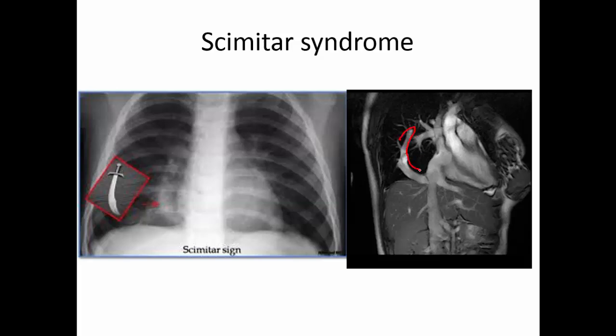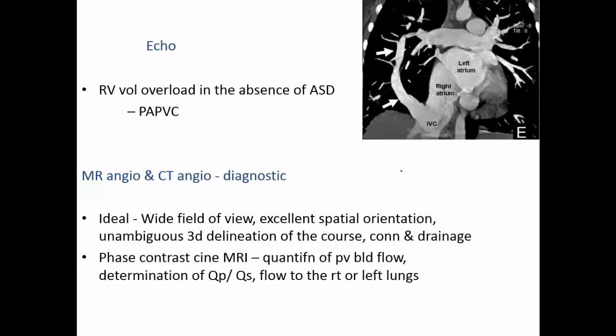This MRI scan example of scimitar syndrome shows the anomalous venous drainage from the right lung going straight into the inferior vena cava and then into the right atria. On echocardiogram you would typically see an overloaded right ventricle with no obvious ASD, which should make you think about partial anomalous pulmonary venous drainage or scimitar syndrome. Do an x-ray and if not sure, request CT or MRI to confirm the diagnosis — it can be quite difficult especially in larger patients with poor windows.